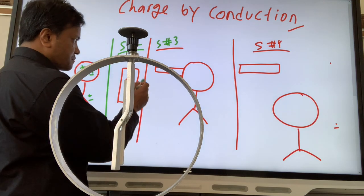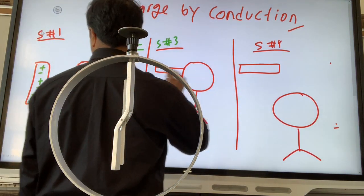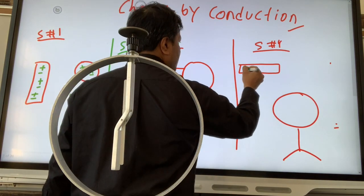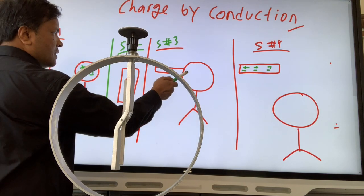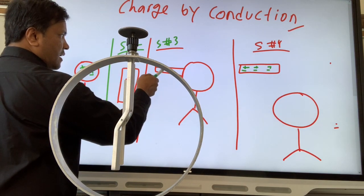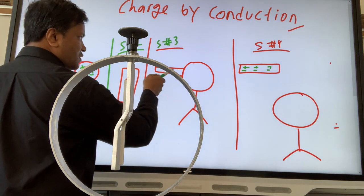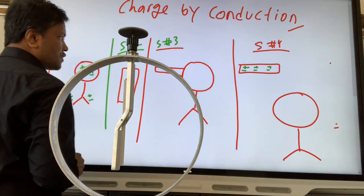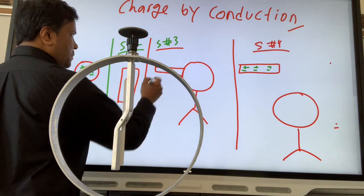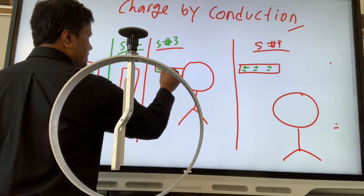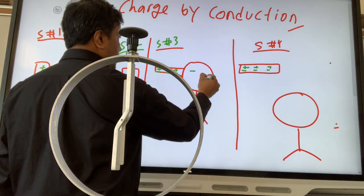Now this one will become neutrally charged again. Why is that? Because all the electrons will now be able to transfer from here to the electroscope, making it neutrally charged and making it negatively charged.